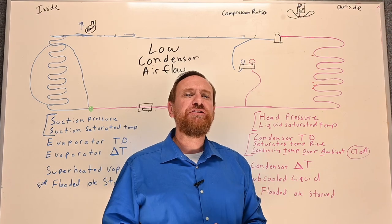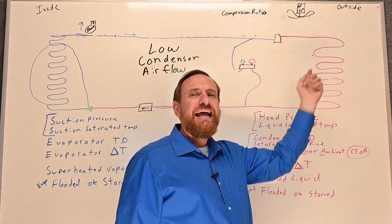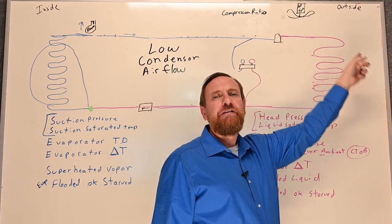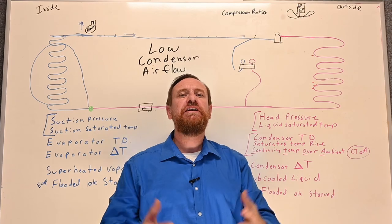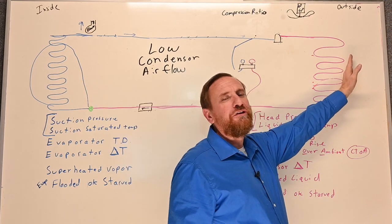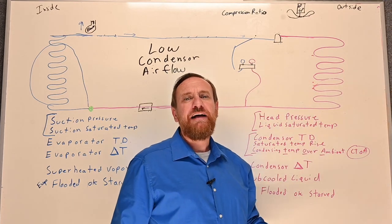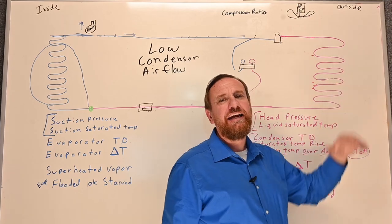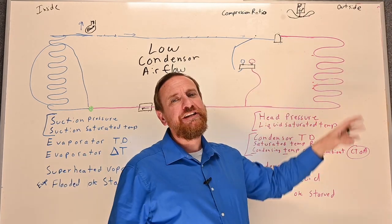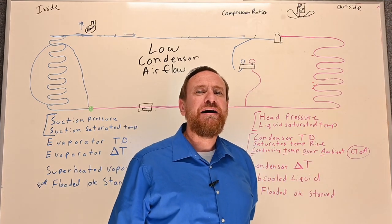Another cause related to airflow would be air recirculation. If somebody built something on top of the condensing unit, the air coming out would hit it and come back around — that's air recirculation. Yet another example is something too close to the condensing unit; maybe they placed it too close to the house or have something next to it blocking the airflow. Airflow inside is important, but airflow outside is very important as well.